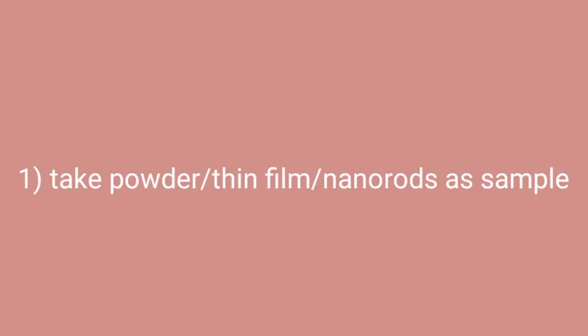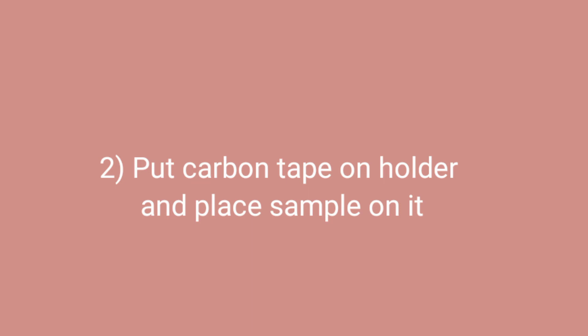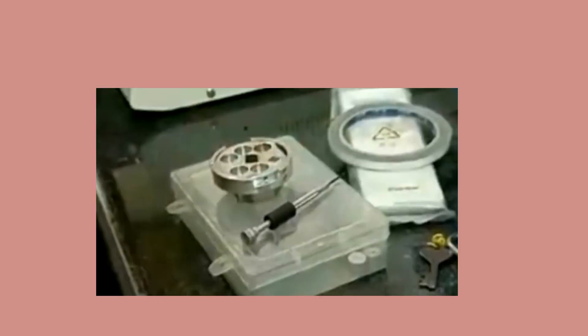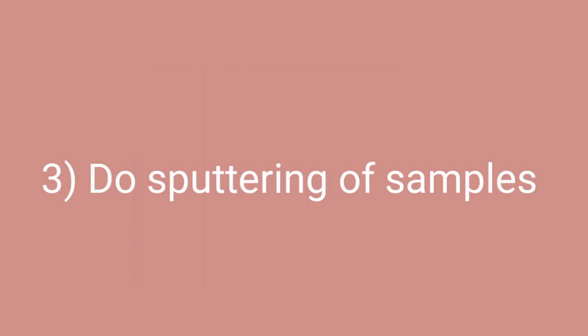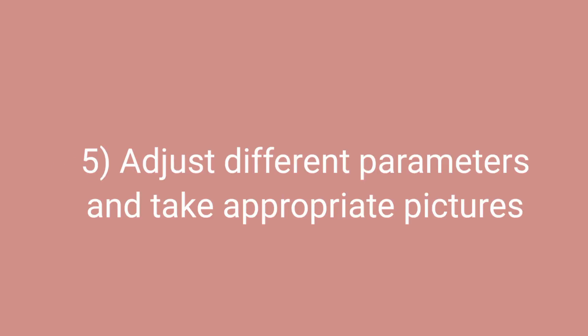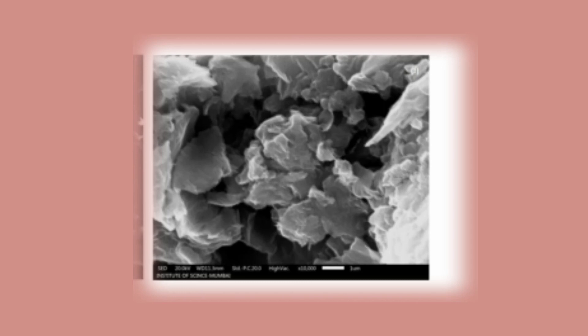Steps required for SEM analysis: Take powder, thin film, or nanorods as a sample. Place a carbon tape on the holder and put the sample on it — do not put excessive sample; tap to remove any extra. Next, do sputtering of the sample, where a thin film of conducting material is deposited on it. Carefully place the sample inside the chamber, then adjust distance, voltage, power, speed, position, focus, scale, and brightness to take appropriate images.